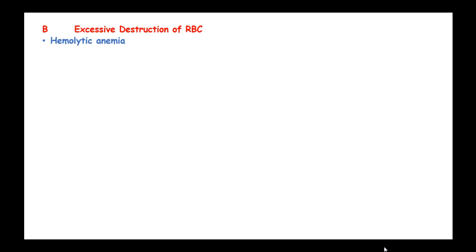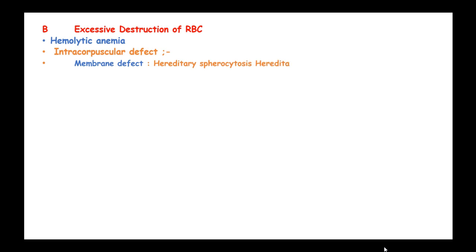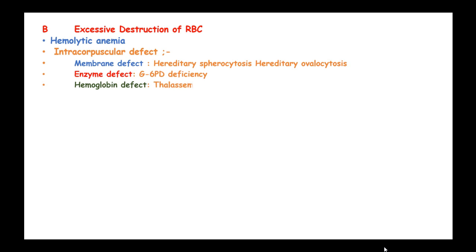Hemolytic anemia results from excessive destruction of red blood cells, and this can be due to intracorpuscular defects, like membrane defects in hereditary spherocytosis and hereditary ovalocytosis. We have enzyme defects in glucose-6-phosphate dehydrogenase deficiency, and hemoglobin defects like in thalassemias and hemoglobinopathies.